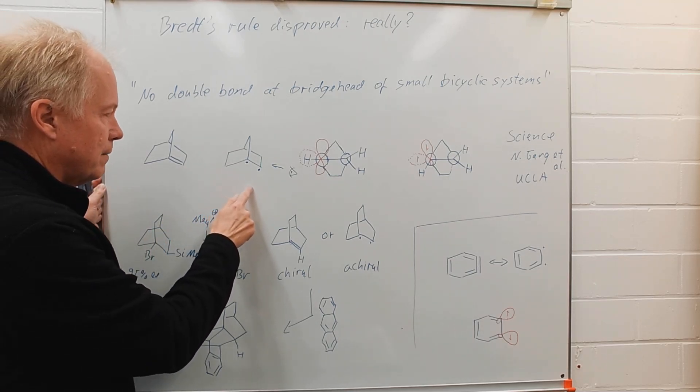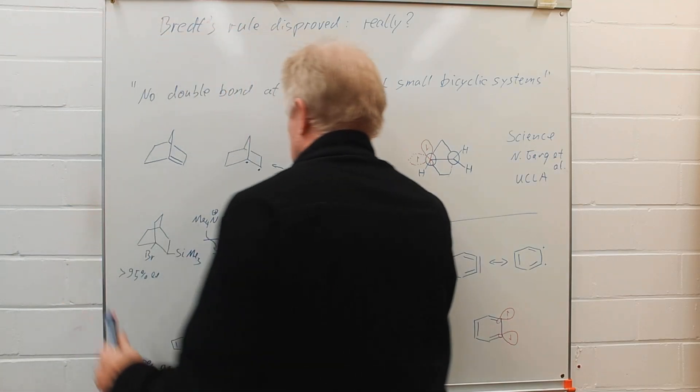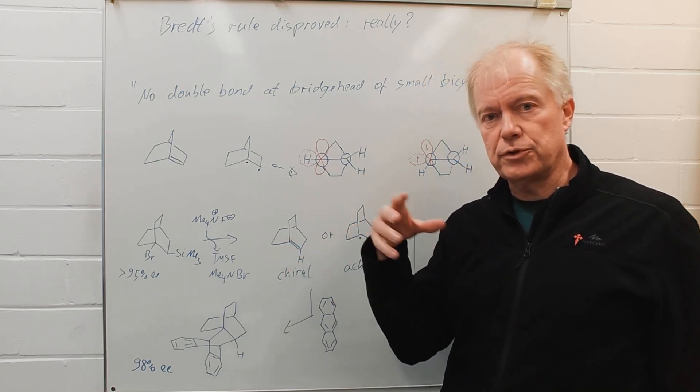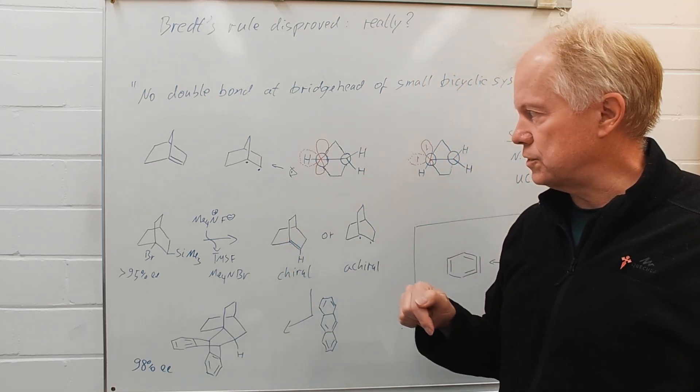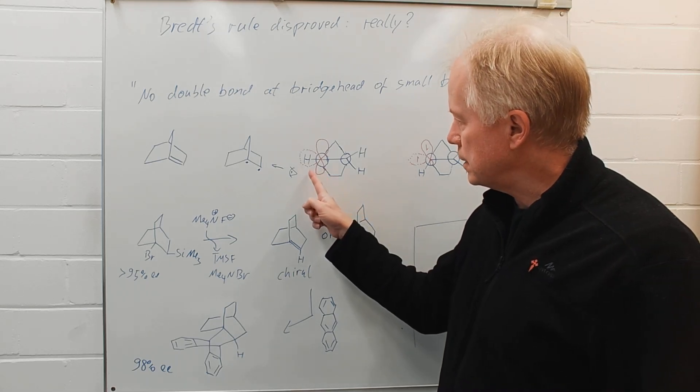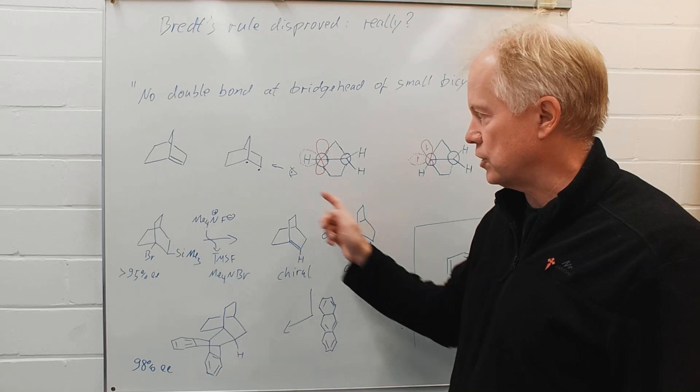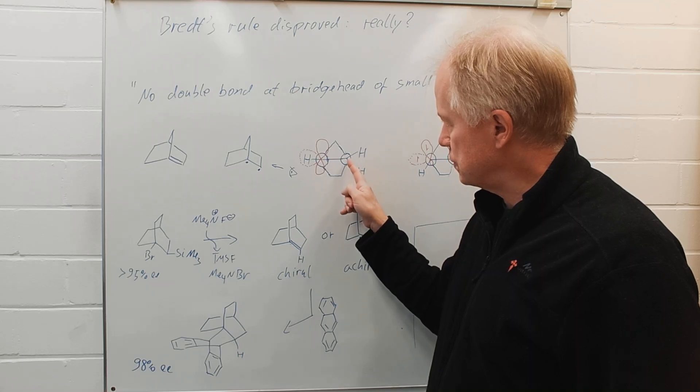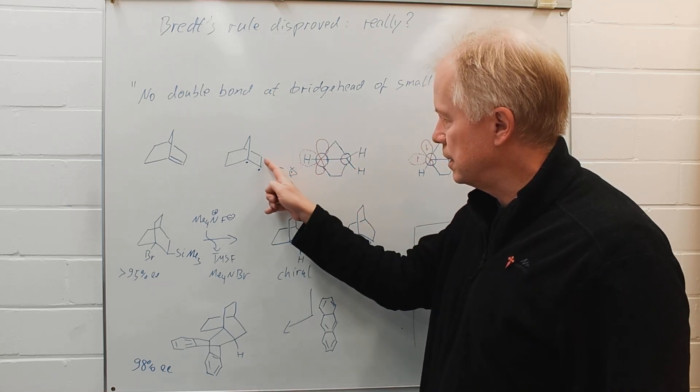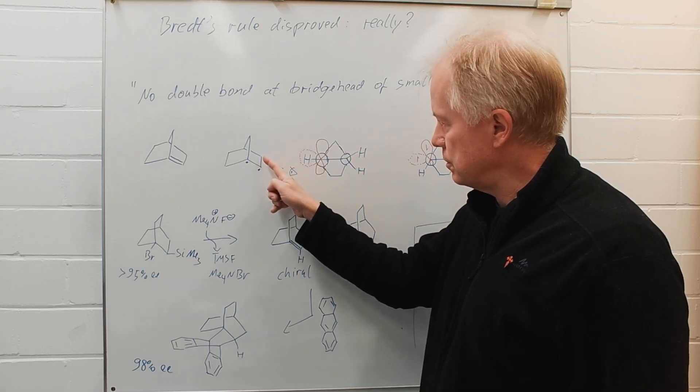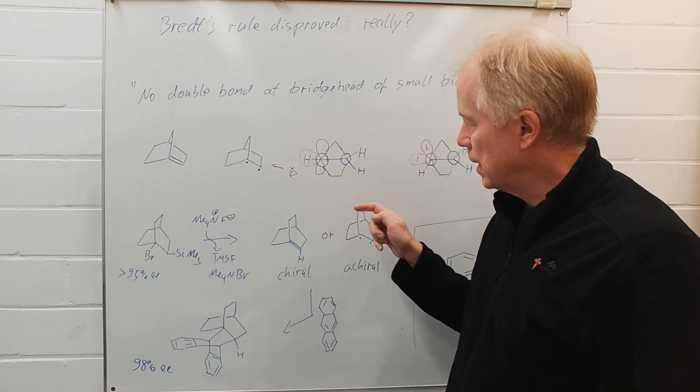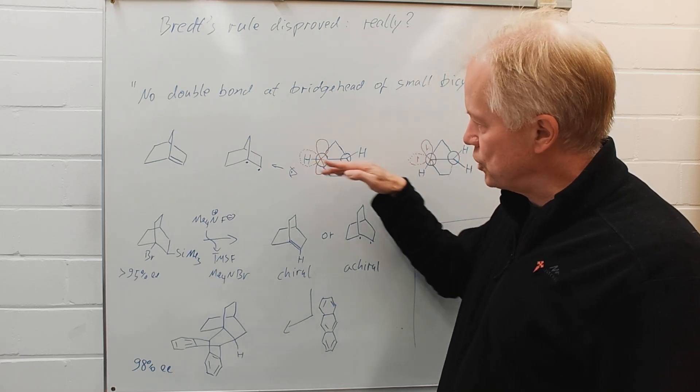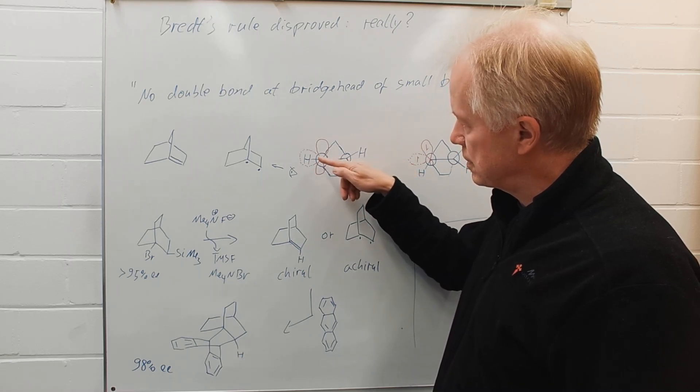For this molecule I have drawn a Newman projection and discussed that already in a preceding video. The link is down below. And here we have this kind of projection, one carbon, one carbon, Newman projection. Here this blue cycle, the second blue cycle for the second carbon atom with the two hydrogens here. And the hydrogen at this position should be in the projection in line with that carbon, that carbon and that hydrogen.